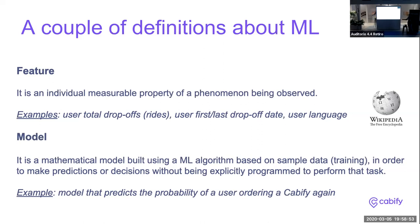Another feature could be the date of the first or last drop-off of a user, or maybe the user language or user country. Those are features, and features are used as input for machine learning models. A machine learning model is a mathematical model built using a machine learning algorithm that takes some sample data as input and is able to make predictions or decisions without having been specifically programmed to do so. The algorithm learns about the sample data, extracts common patterns, and infers what output it should return for any given input.